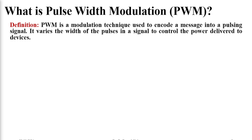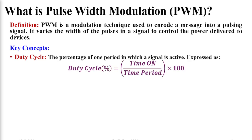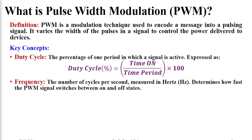Let us go a bit deeper so that things will get more clear. In pulse width modulation, we try to change the duty cycle of a signal. Duty cycle is generally given in percentage and it is calculated as the on-time period divided by the total time period of the signal. Secondly, we change the frequency of the PWM signal depending on our requirement. Frequency is the number of cycles per second, measured in hertz, and it determines how fast the PWM signal will switch between on and off state.